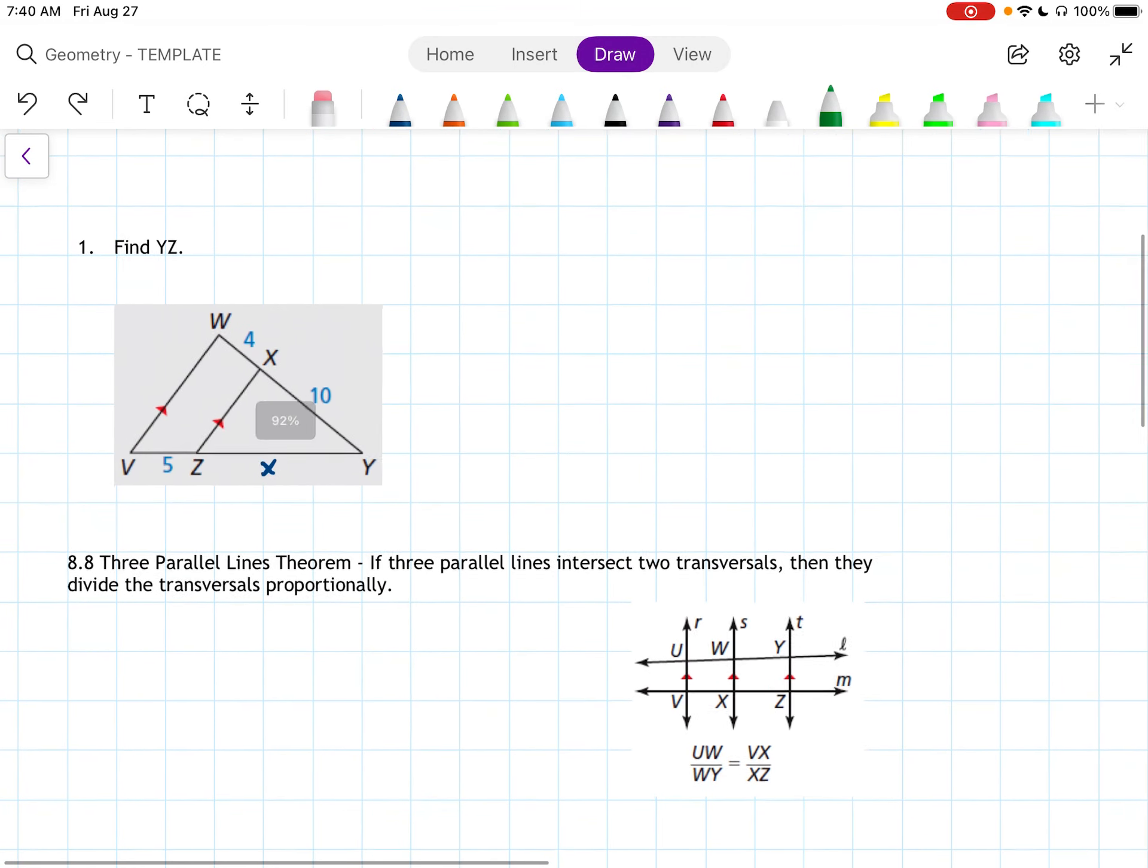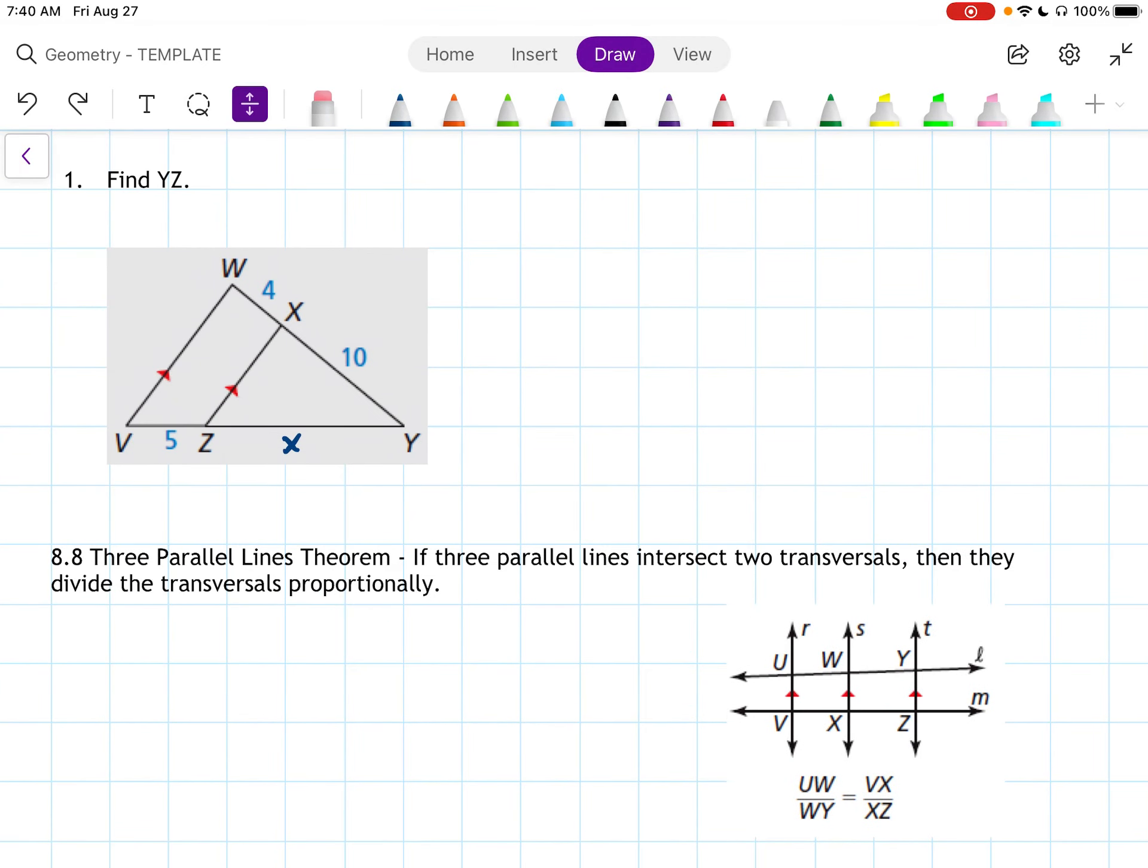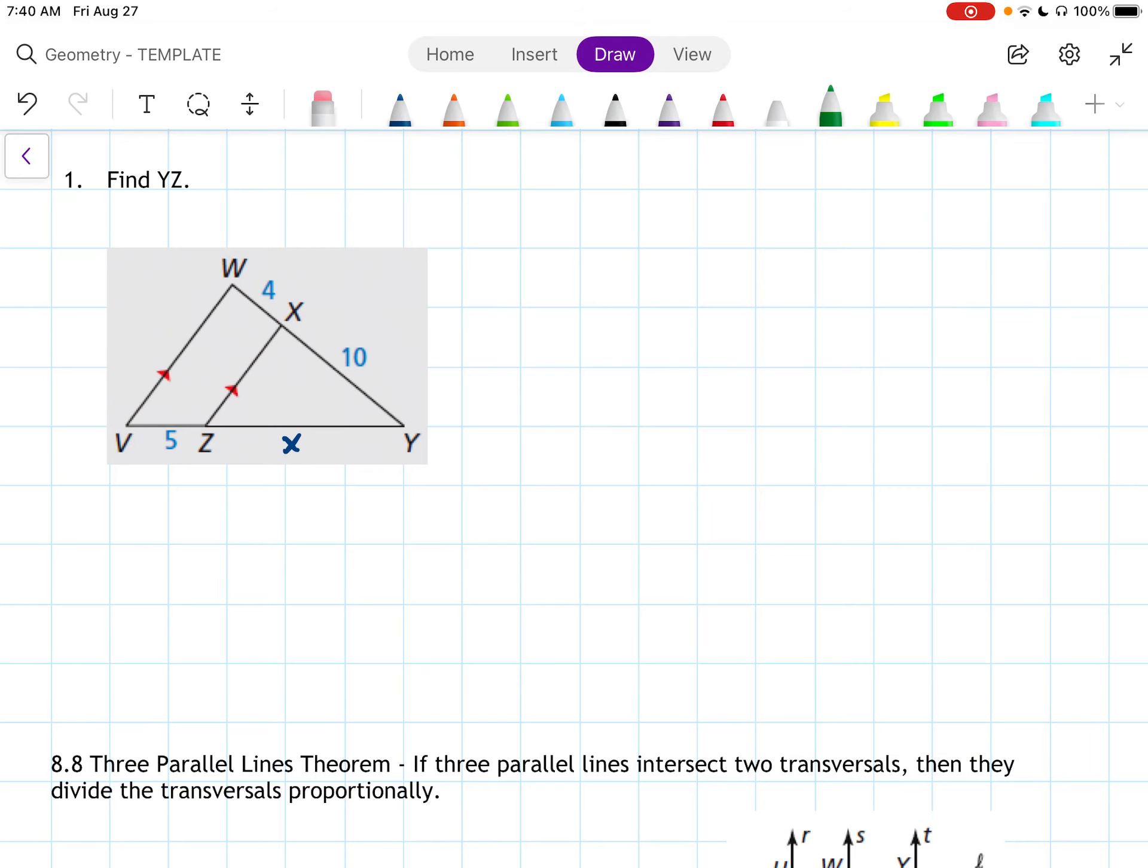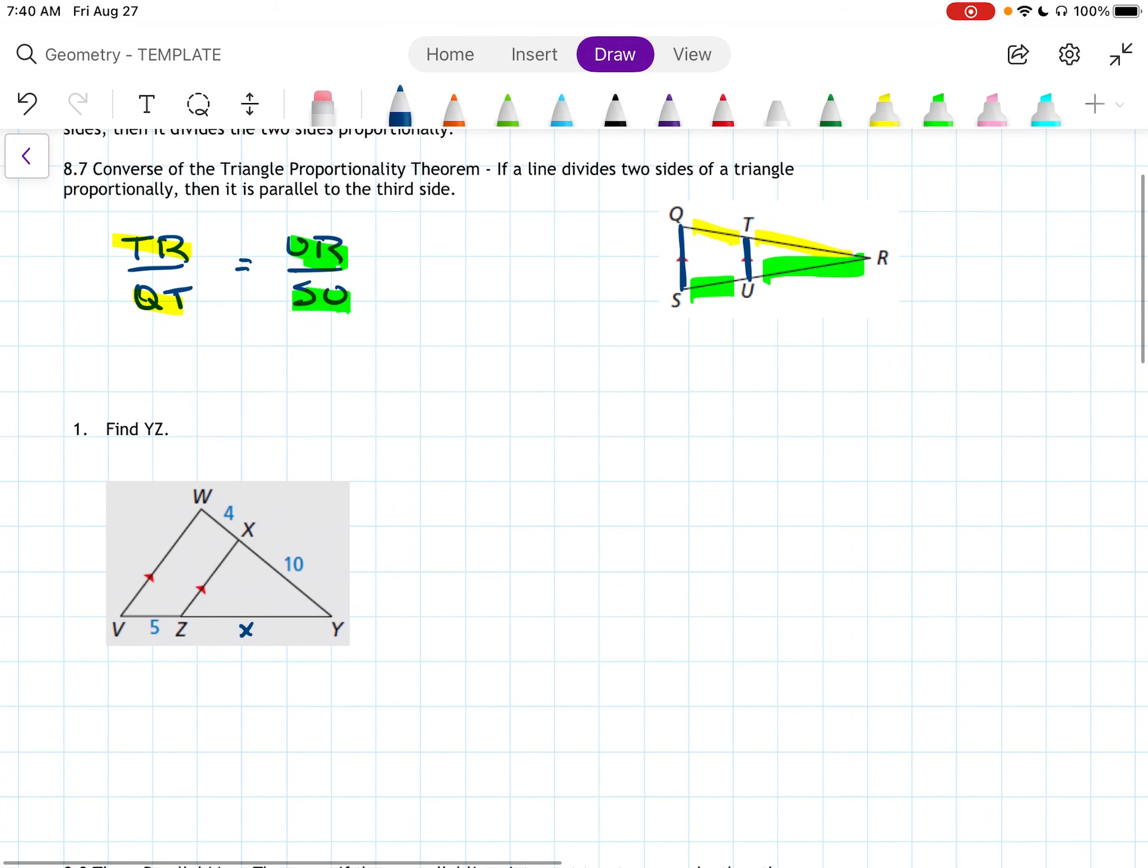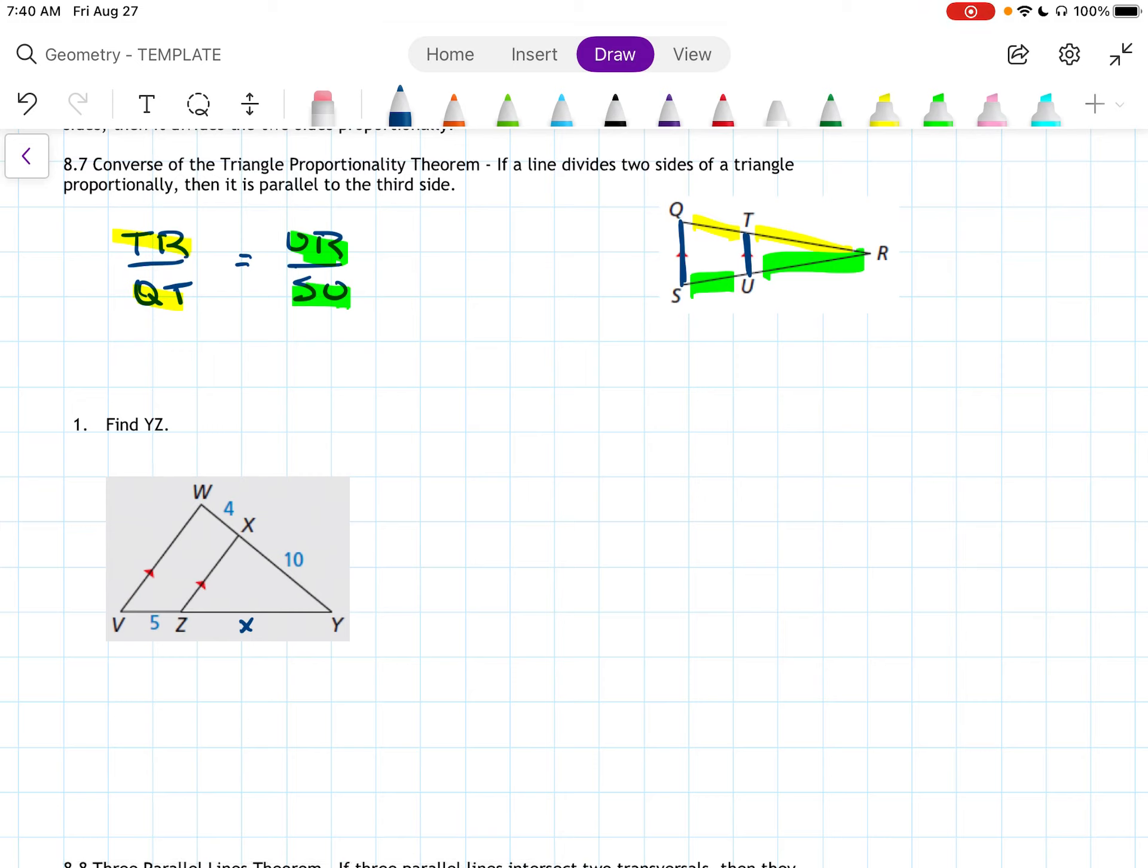Number one, find YZ. So I've already drawn in an X there because I don't really want to have to use two variables, the Y and the Z together. So we're going to kind of plug into this proportion over here. We're going to put the long side on top. That way we can put X on top. X over 5 equals the long part, 10 over 4.